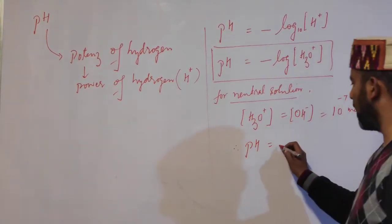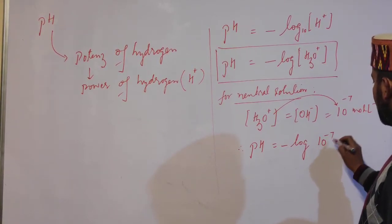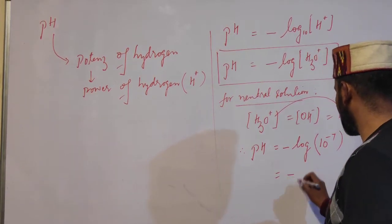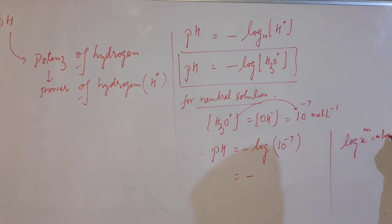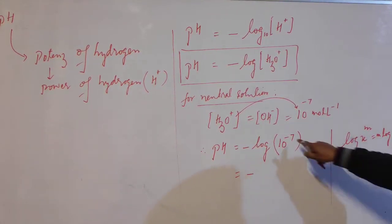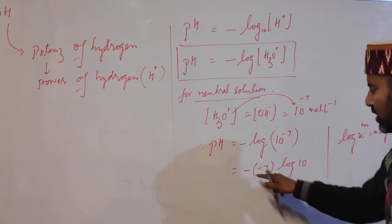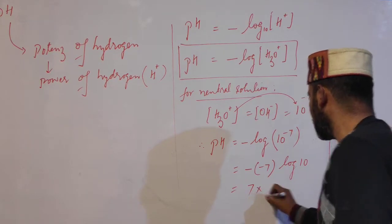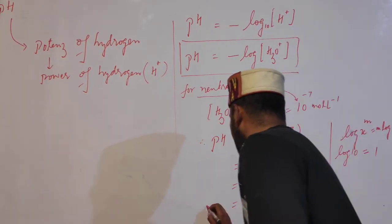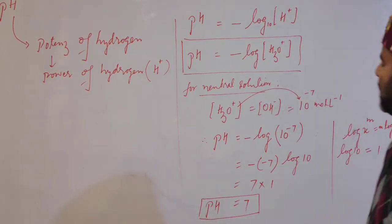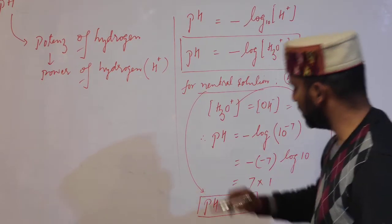So the pH of this neutral solution is: pH = -log[H₃O⁺] = -log(10⁻⁷). Using the logarithm property log(xᵐ) = m·log(x), we get -(-7)·log(10). Since log 10 = 1, pH = 7. So remember: at 25°C, a neutral solution has pH = 7.